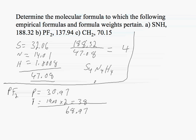If we take our 68.97 and divide it, 137.94 divided by 68.97, this gives us a whole number of 2.